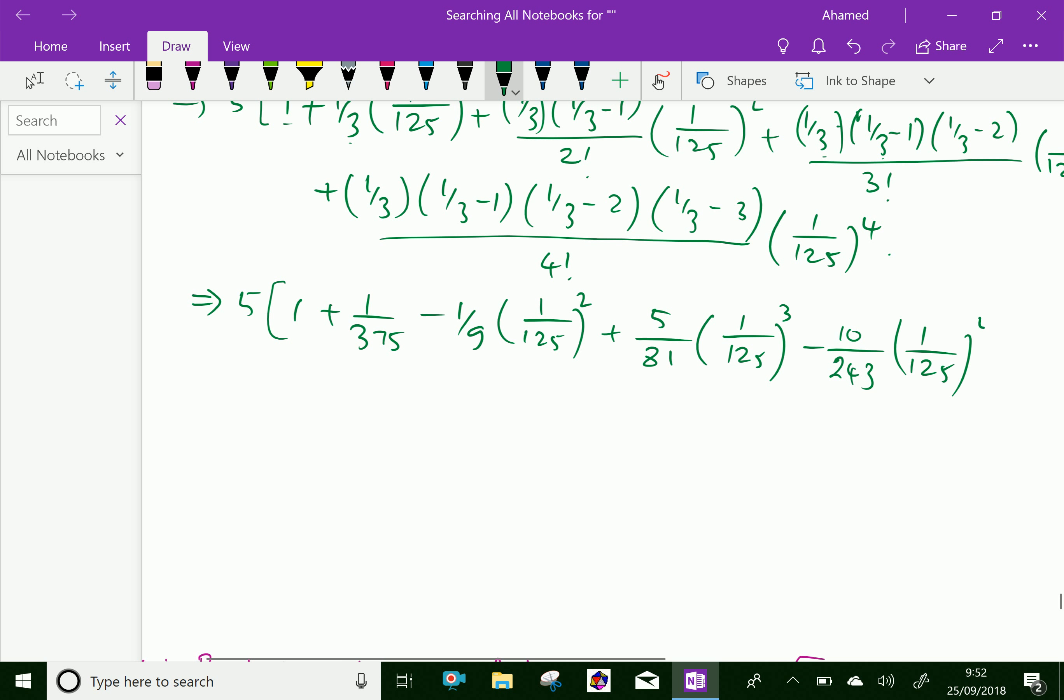Minus the last term simplification gives 10/243 times 1/125^4. This goes on increasing. Now further, 5 times [1 + 8/3 times 1/1000].